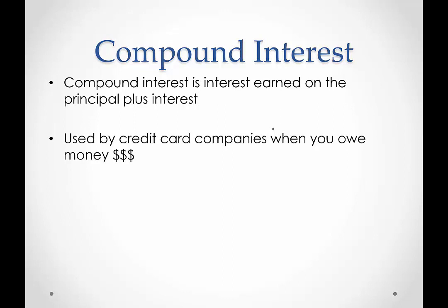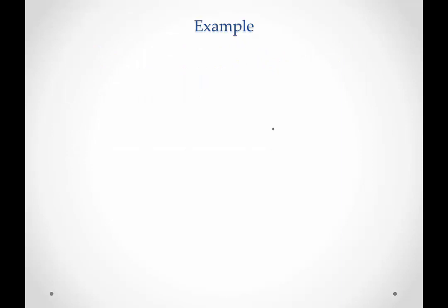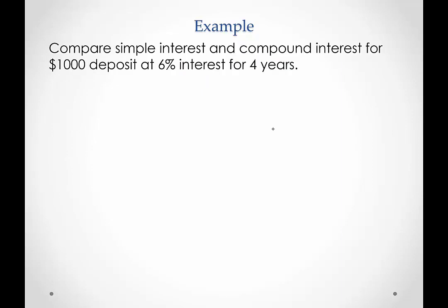In this video, we're only going to look at compound interest when it's compounded annually. In the next video, we'll talk about when it's compounded more than once a year. So let's get started. Our first example, we're just going to compare simple interest to compound interest. So we're looking at a $1,000 deposit at 6% interest for four years.